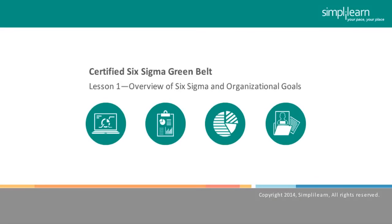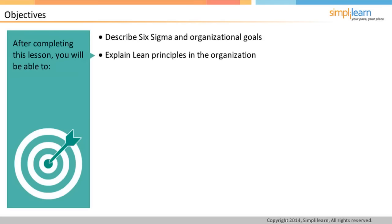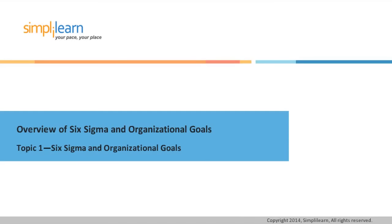Hello and welcome to the first lesson of the Certified Six Sigma Greenbelt course offered by Simply Learn. This lesson provides an overview of Six Sigma and the organizational goals. After completing this lesson, you will be able to describe the basics of Six Sigma and organizational goals, explain Lean principles in the organization, and design for Six Sigma. In this topic, we will discuss the basics of Six Sigma and organizational goals.